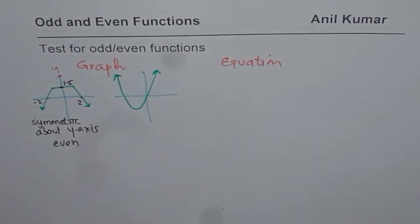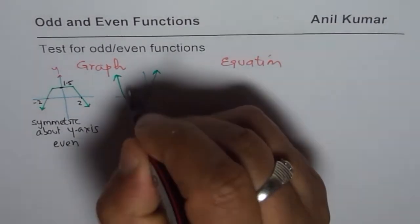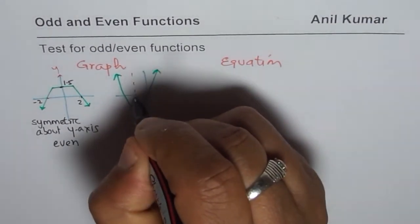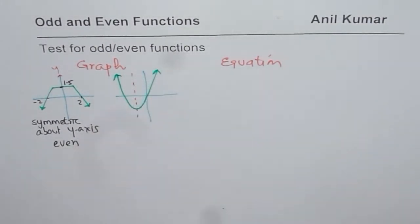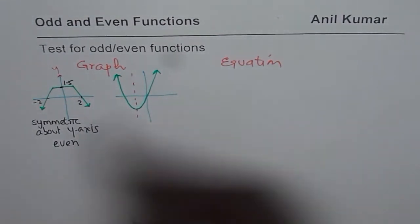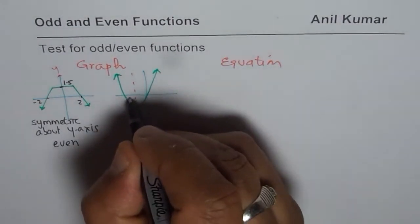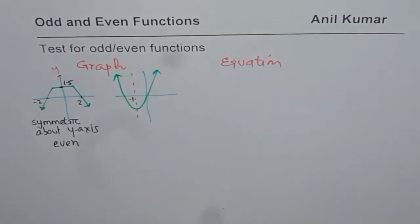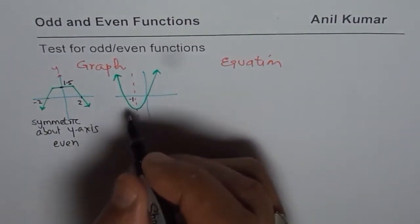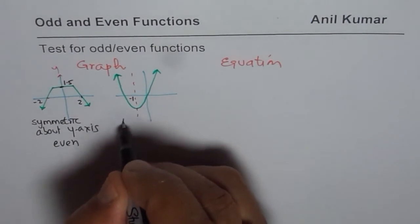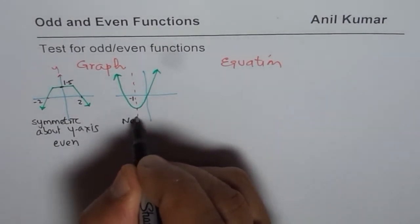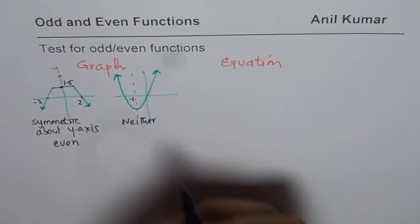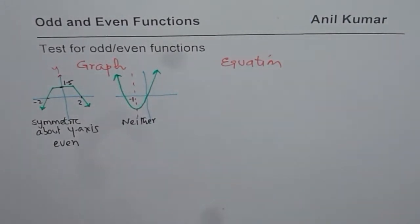For the second graph, the line of symmetry is not the y-axis — it is somewhere parallel to the y-axis, let's say at x = minus 1. So this function is neither even nor odd. If your graph is given, you can find the type of symmetry to classify the function.